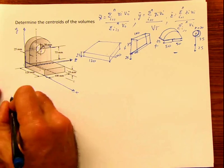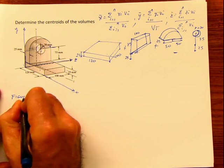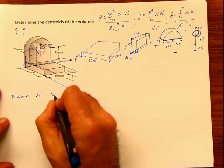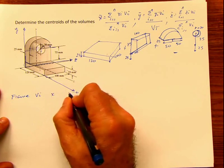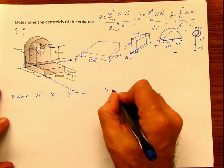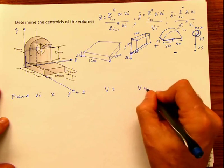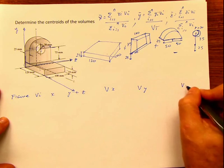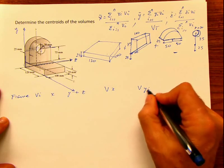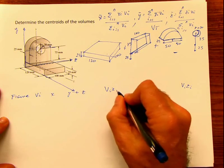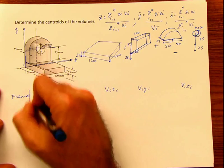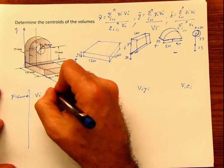So I start my table with columns: figure, V, x, y, z, V·x, V·y, and V·z. Remember, we need to compute v_i · x_i, v_i · y_i, and v_i · z_i for each figure.